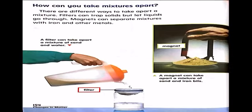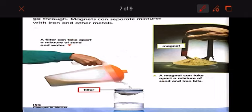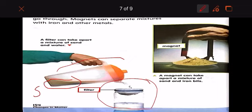So how can you take mixtures apart? So there are different ways to take apart a mixture. Look at here. This is a filter. This is the filter. So filters can trap solids. This is the solid, the sand. And here is the liquid. Okay? So filters can trap the sand but let liquid, which is water, go through. So a filter can take apart a mixture of sand and water. Right? Remember that sand and water do not mix. The sand does not dissolve in water. Alright?